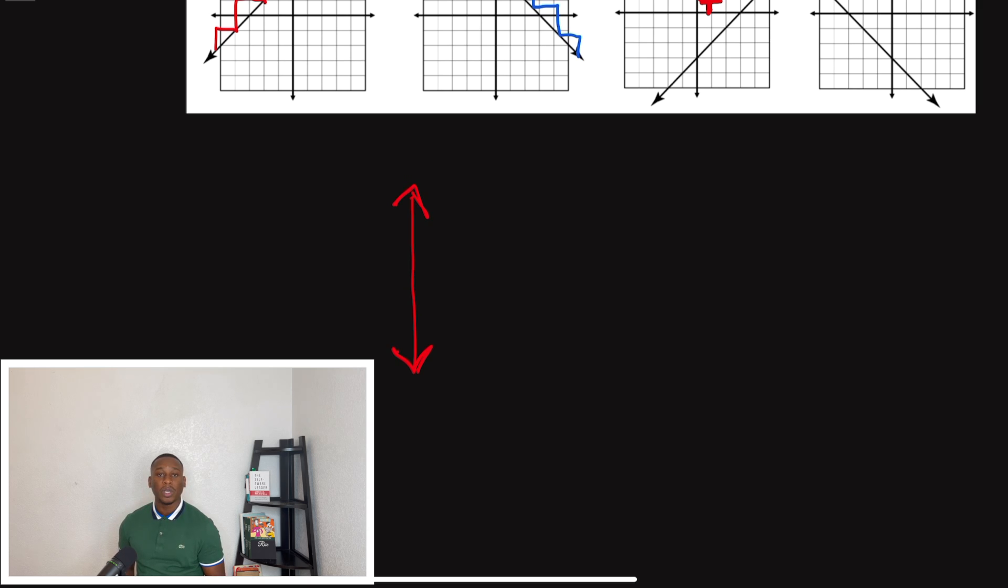like this red line I'm showing, that means there is no slope. And no slope also means that it is undefined, meaning we cannot find a slope. There is no slope for it.